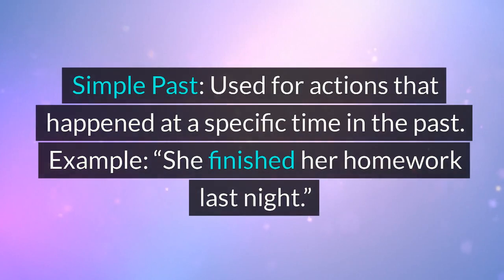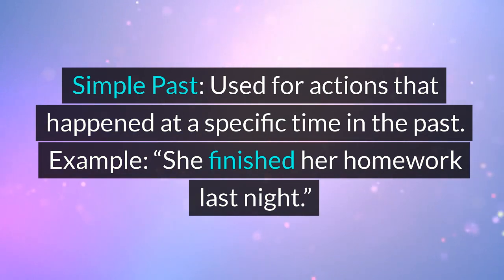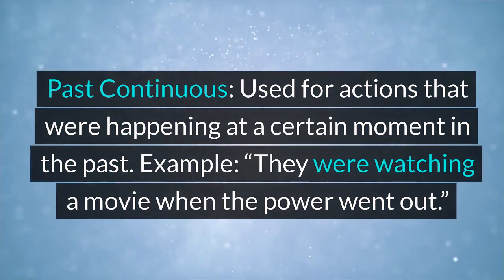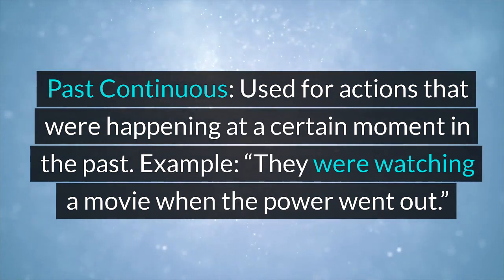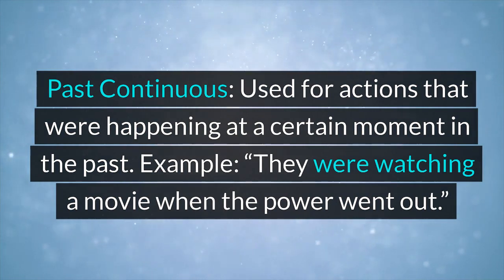Simple past: used for actions that happened at a specific time in the past. Example: she finished her homework last night. Past continuous: used for actions that were happening at a certain moment in the past. Example: they were watching a movie when the power went out.